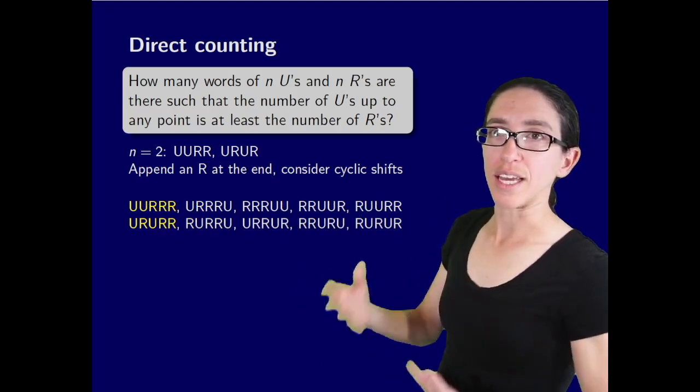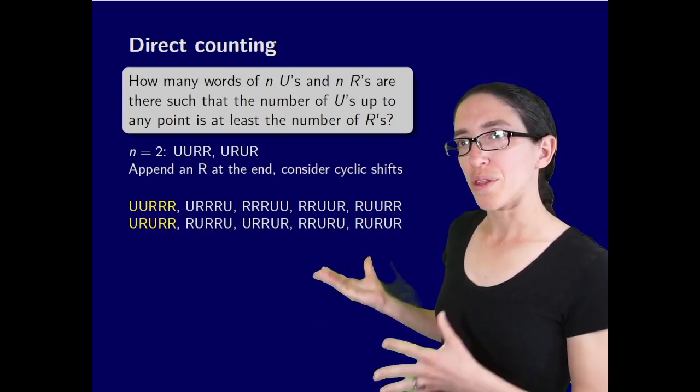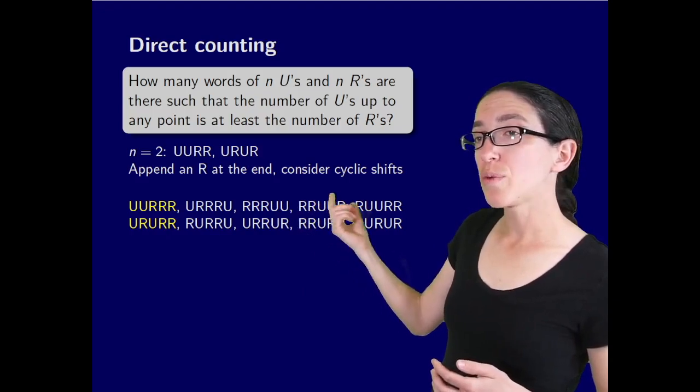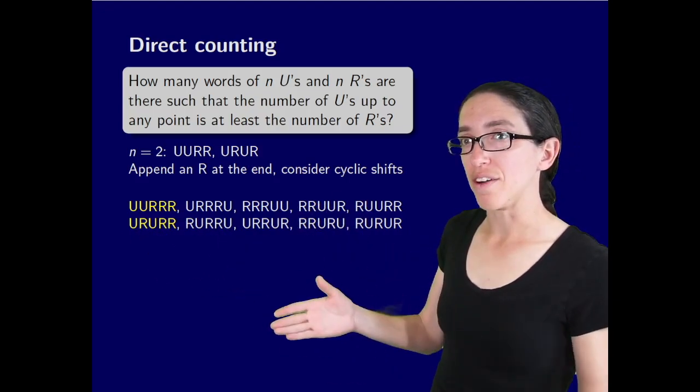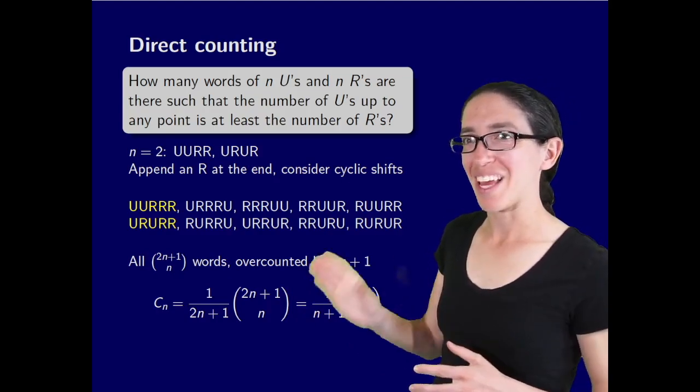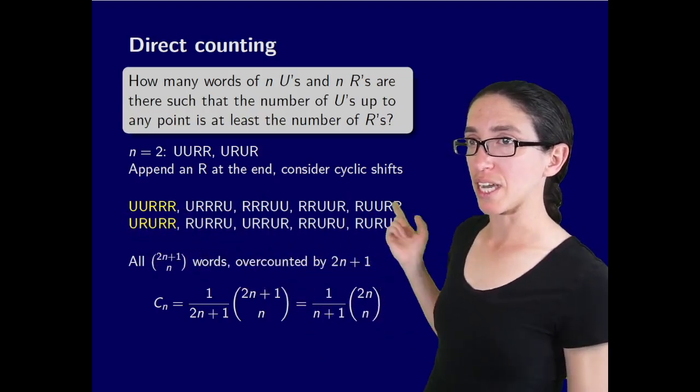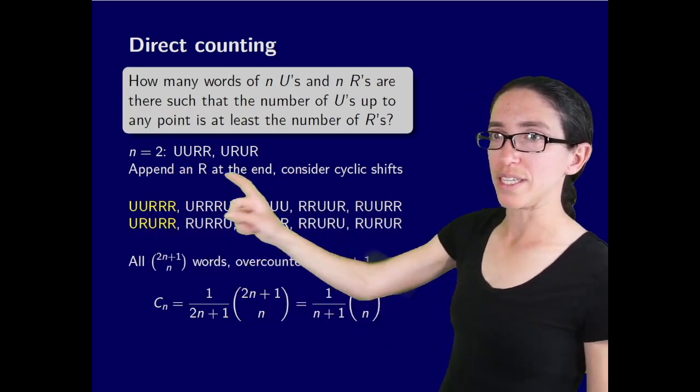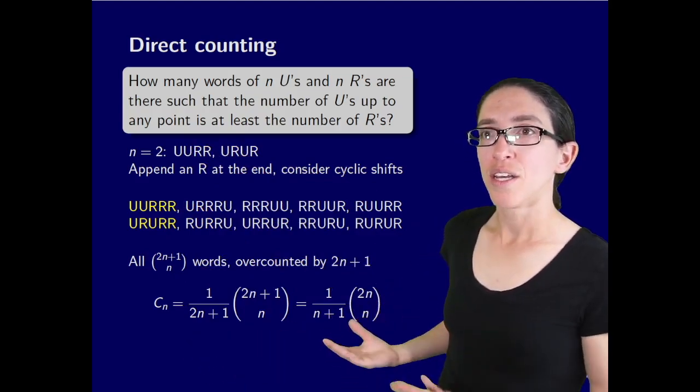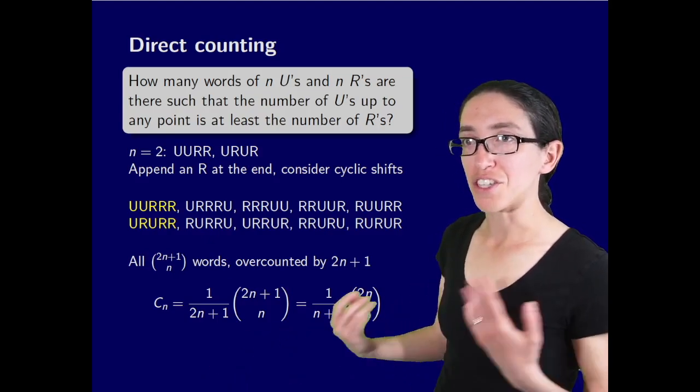This first row is one cycling of one of these words and then the second row is all the cyclings of the next word. You see that there's ten total, which is the total number of words with three R's and two U's. In fact every possible word appears exactly once here. These are all 2n plus 1 choose n words with n plus 1 R's and n U's and we've overcounted by a factor of 2n plus 1. We only want to count the yellow ones so we take the total ones and divide by 5 and that gives us our 2. In general we take the total 2n plus 1 choose n and divide by 2n plus 1, which is equivalent to 1 over n plus 1 times 2n choose n. Either of these beautiful formulas are explicit formulas for the Catalan numbers.